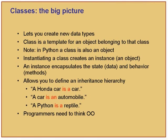So let us get to classes. The big picture of classes is as follows: the main thing is that they let you create new data types. Basically, a class is a template in order to create objects of that particular class. Think of it as the blueprint that makes your Honda Accord — the notion of what defines a Honda Accord as against the Honda Accord itself. So that is what a class is, it is like a template.